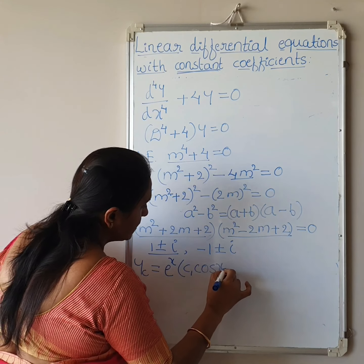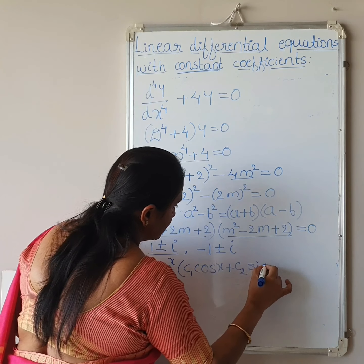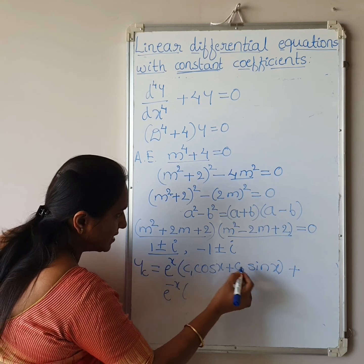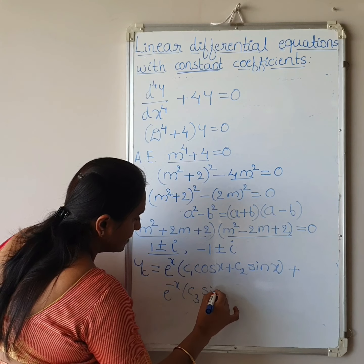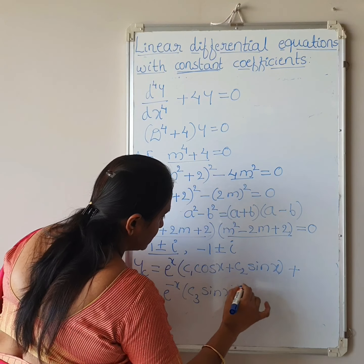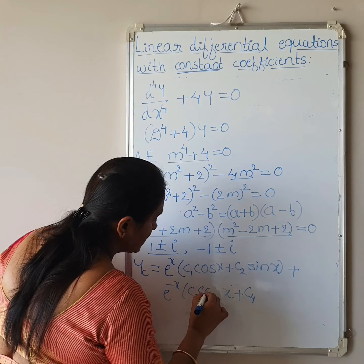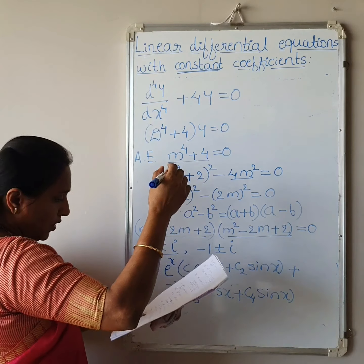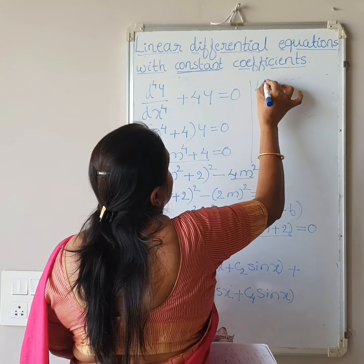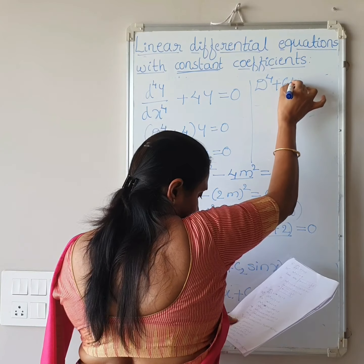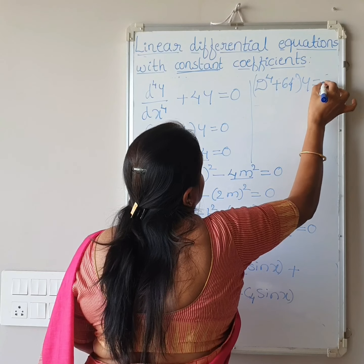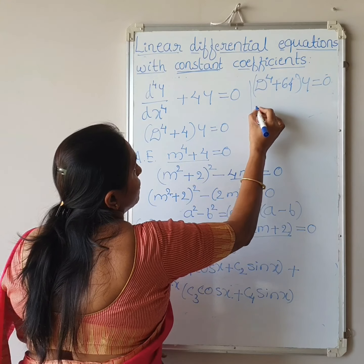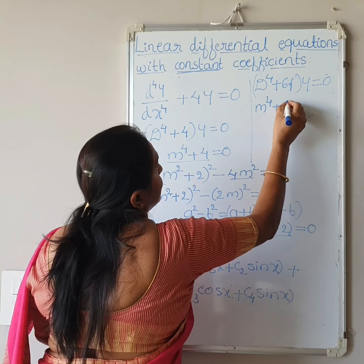For this 4th order equation, all 4 roots are imaginary, giving 4 constants. For roots 1 ± i: e^x·(c1·cos(x) plus c2·sin(x)). For roots -1 ± i: e^(-x)·(c3·cos(x) plus c4·sin(x)). So yc equals e^x·(c1·cos(x) plus c2·sin(x)) plus e^(-x)·(c3·cos(x) plus c4·sin(x)).